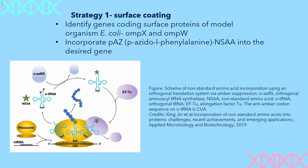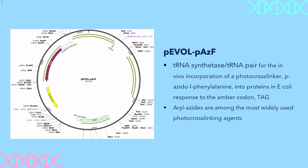Our strategy is to target the surface proteins and use non-standard amino acid (NSA) incorporation to inject the surface proteins with the properties that we want, have a surface coated with our B molecule, and have these two components interact to form a uniform film on a layer. Our first strategy is to identify genes coding surface proteins of our model organism E. coli, and use the outer membrane proteins OmpX and OmpW. We are then going to incorporate pAzF, which is a non-standard amino acid, into the desired gene.